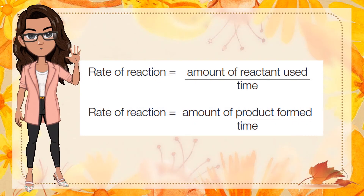The rate of reaction is the change in the concentration of a reactant or a product per unit time. The rate of reaction can be expressed in terms of rate of disappearance of reactants and the rate of appearance of the product per unit time. The rate of this reaction can be expressed as: rate of reaction equals amount of reactant used over time, and the rate of reaction would be amount of product formed per time.